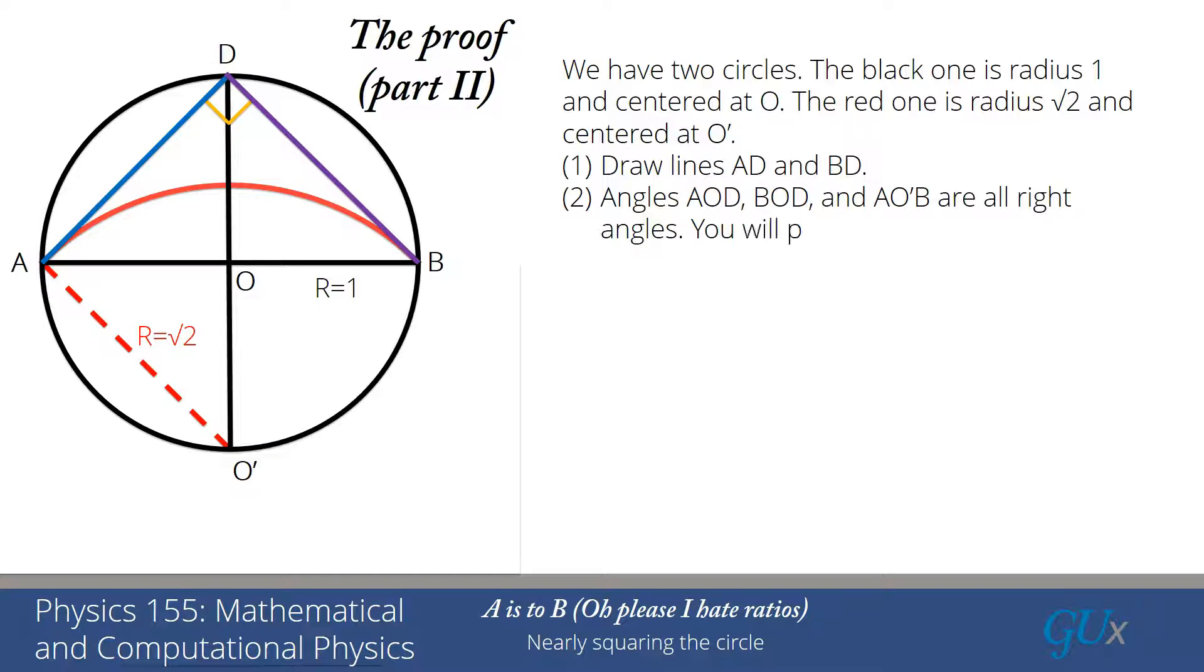The angles AOD and BOD are right angles by construction, essentially, because we have horizontal and vertical lines there. The angle AO'B, which is the same as the angle ADB, is also a right angle. And that is not so obvious necessarily to see, although it clearly looks like a right angle in the picture. And you're going to actually prove in general that that is a right triangle on the homework.